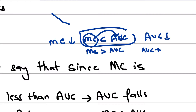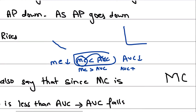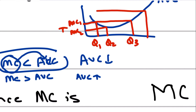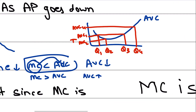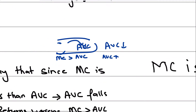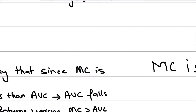Average variable cost is going down because marginal cost is less than the average variable cost, pulling it down with each additional unit. As you increase output, your average variable cost falls. Then after a certain point, your average variable cost starts rising again — because your marginal cost has become greater than your average variable cost. That extra cost the extra unit makes the firm incur is now greater than the average variable cost, pulling it up.